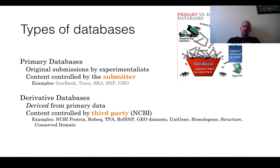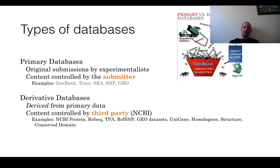In general, you could say there are two types of databases in biology. There are primary databases that contain data submitted by experimentalists, often annotated in some way by computational or manual methods. Examples of these are GenBank and PDB for protein structures. These contain experimental data that is then used by computational scientists.